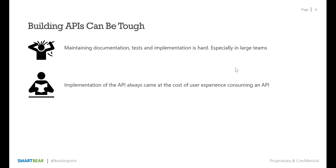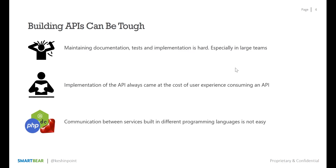In traditional API development, consumer experience and sustainability were always an afterthought. The primary goal was to get the API out as quickly as possible, and that implementation always came at the cost of user experience — there was no forcing function to think about the end consumer. As you build more services, the goal of an API strategy is to ensure interoperability and reusability of data across services, without imposing language-specific restrictions.